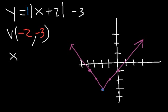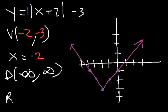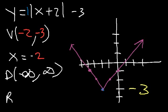The axis of symmetry is x is equal to negative 2. The domain is all real numbers. The lowest y value is negative 3, and because it opens upward, the highest is positive infinity. So the range is from negative 3 to infinity.